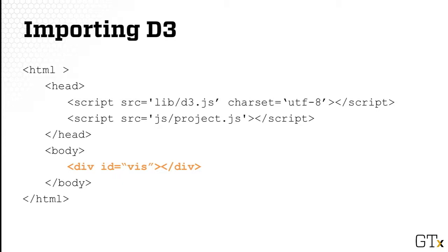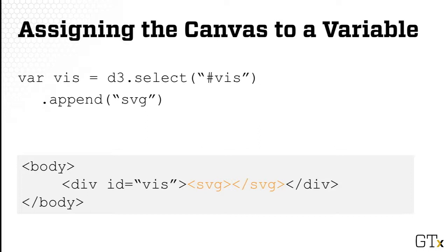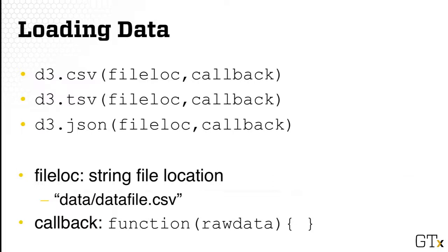After importing the library, you want to add the visualization element. You need a container — so let's say we create a div container with a specific id. Then after that you can add the SVG elements by appending SVG. After calling the select on the div with that id and then doing append SVG, it will be added to the div element as shown.